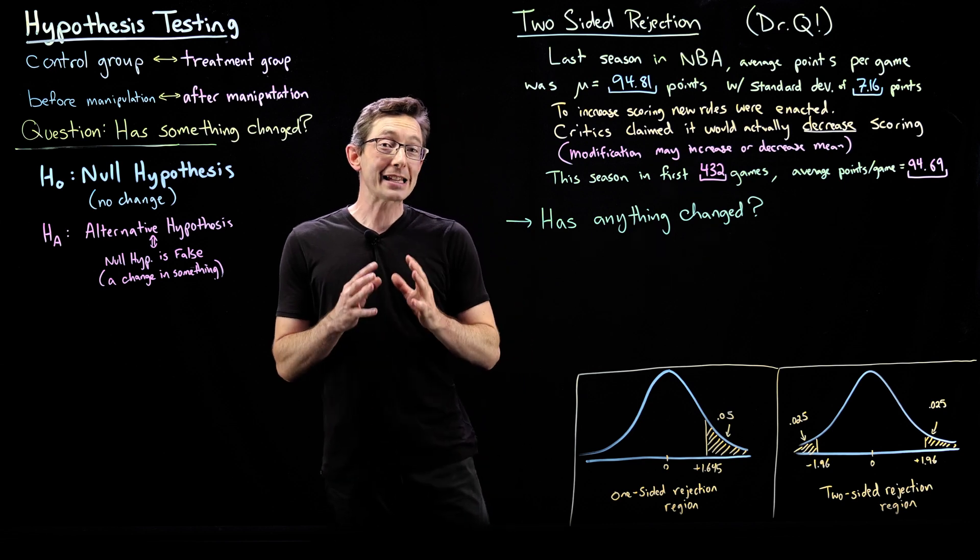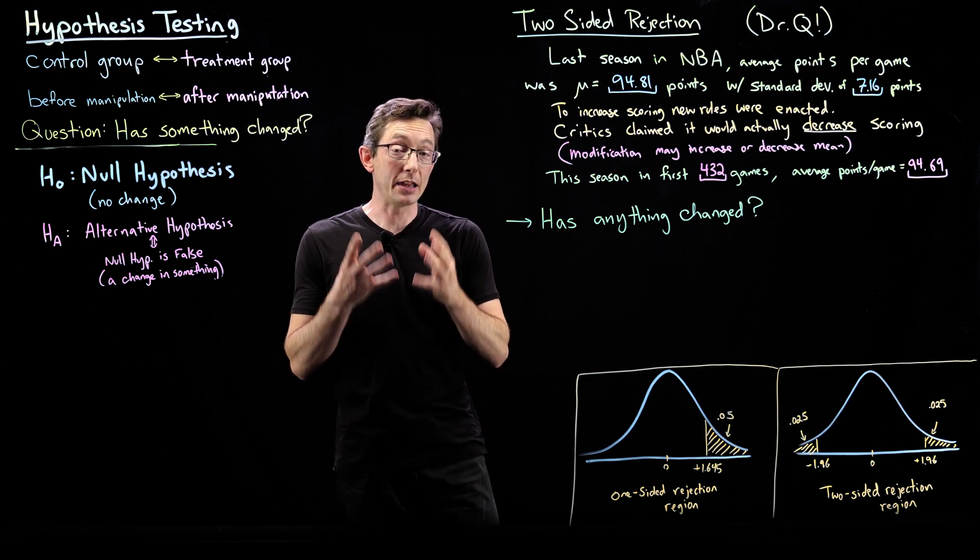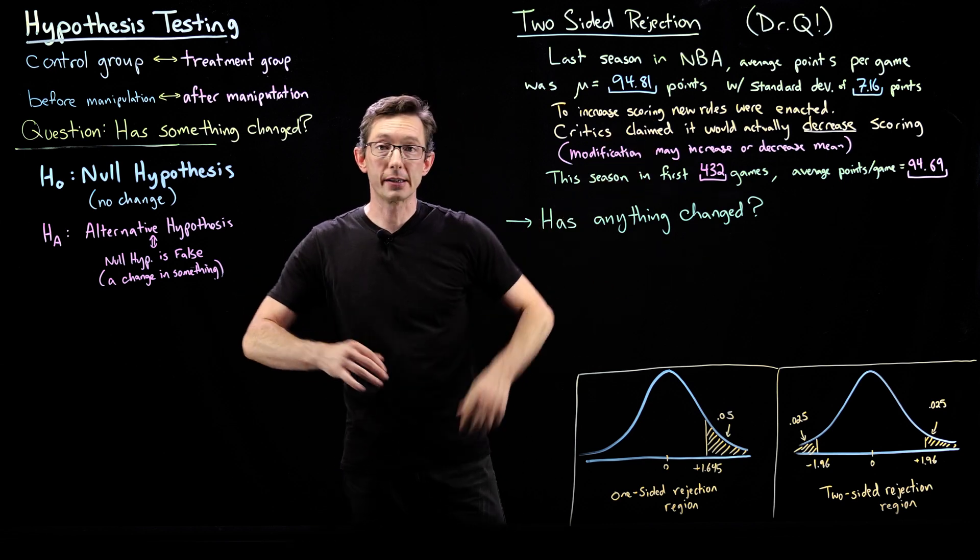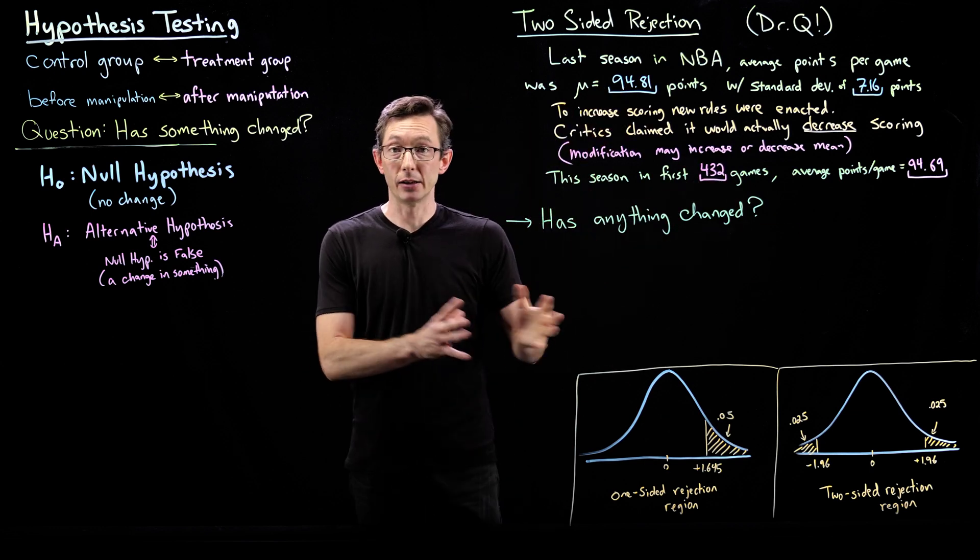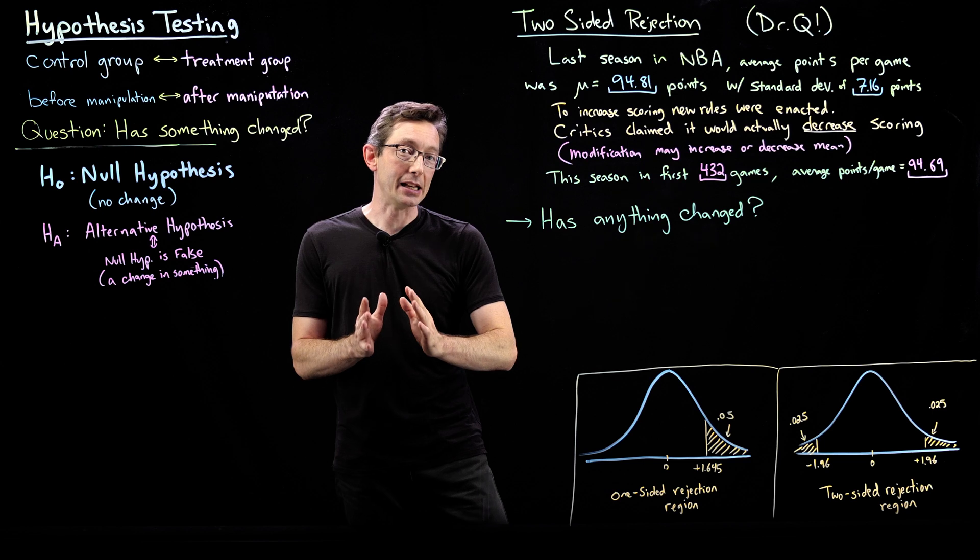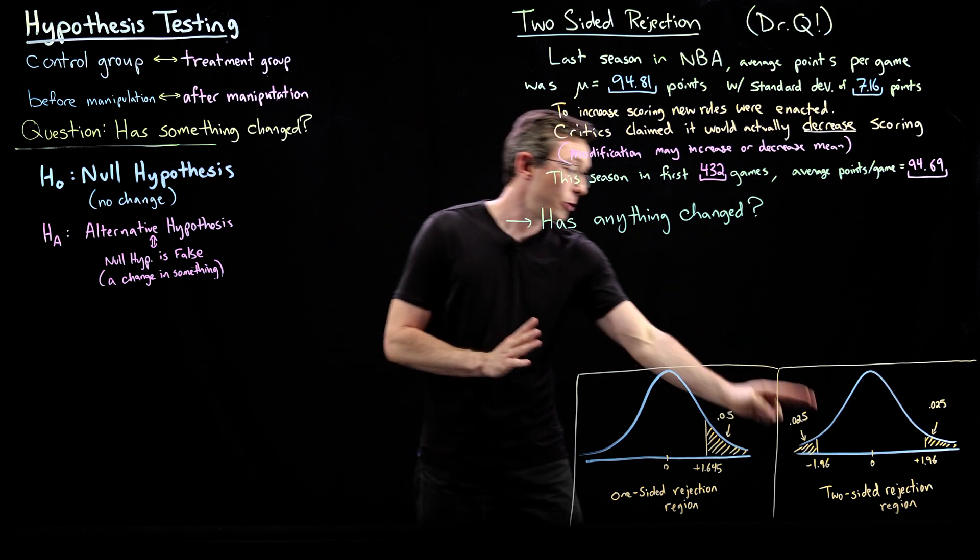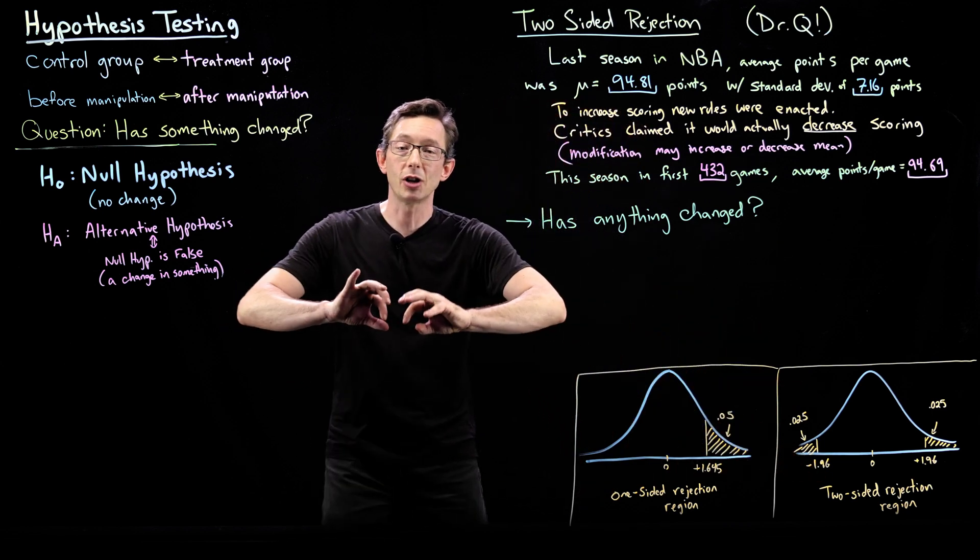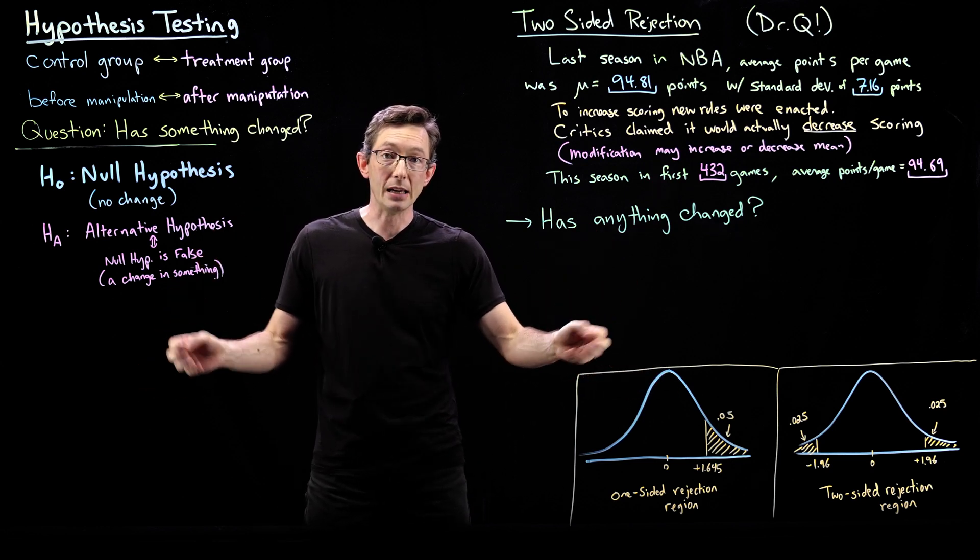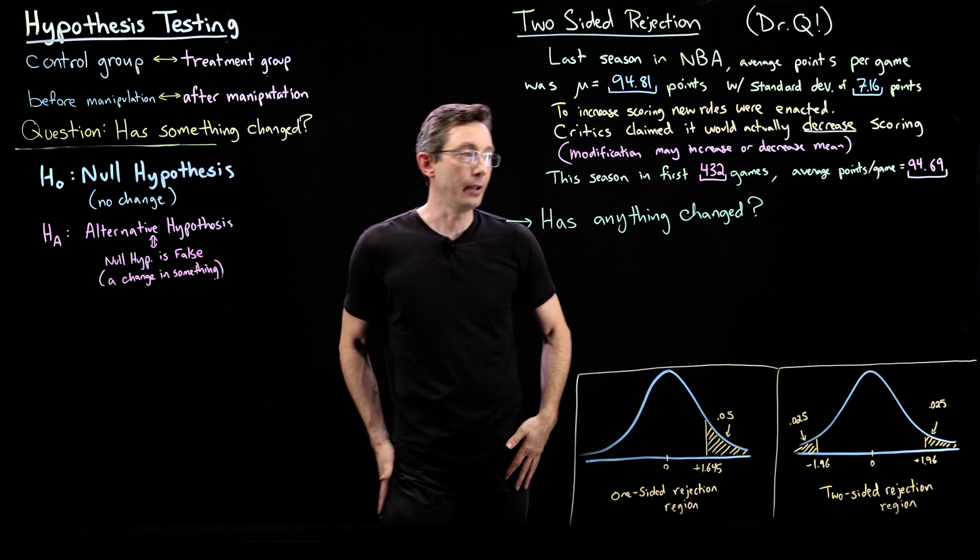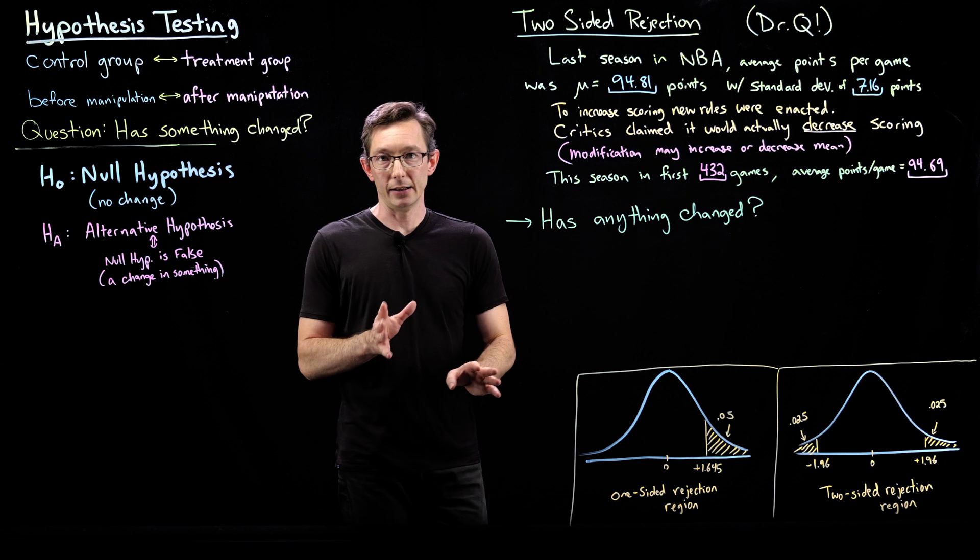In this case we think there's a modification with new rules that might increase or decrease the mean scoring. So we need a two-sided rejection region because there's a chance we have increased or decreased the mean significantly. That's going to be a two-sided test.